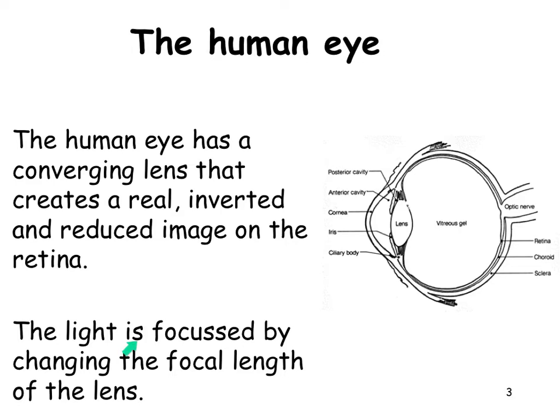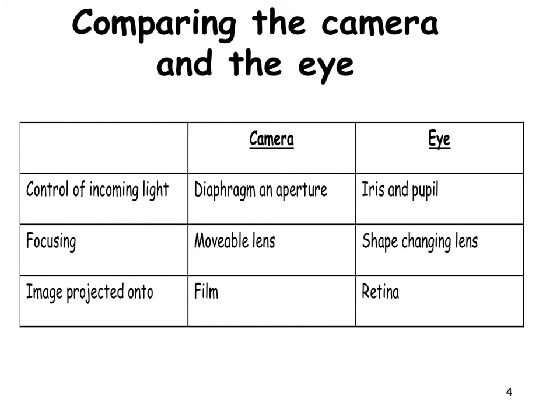Light is focused by changing the focal length of the lens. This is done using little muscles that stretch the lens to be more or less convex. The cornea is the layer on the outside of the eye in front of the lens. As noted, the eye and the camera are very similar.